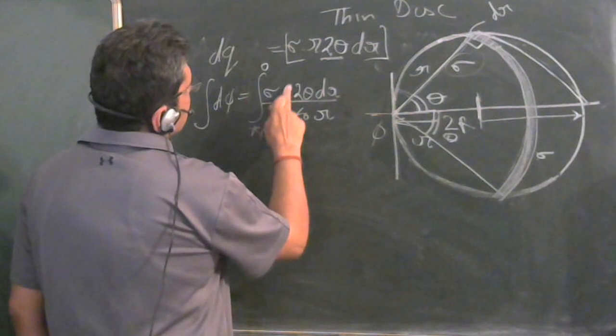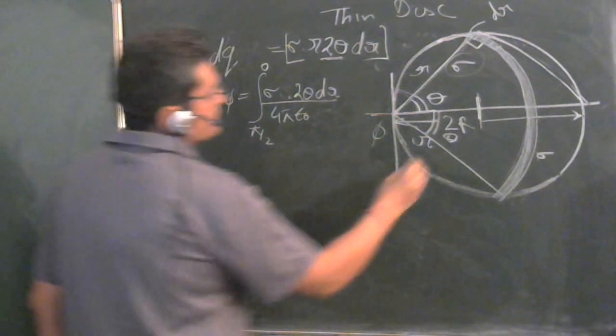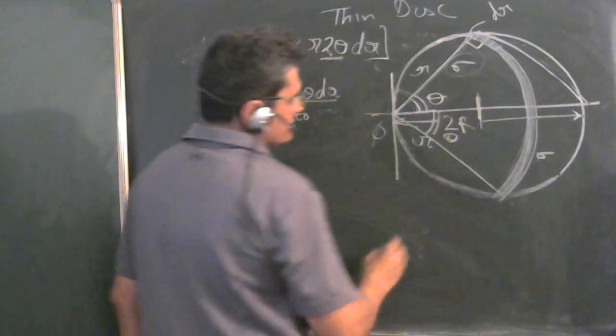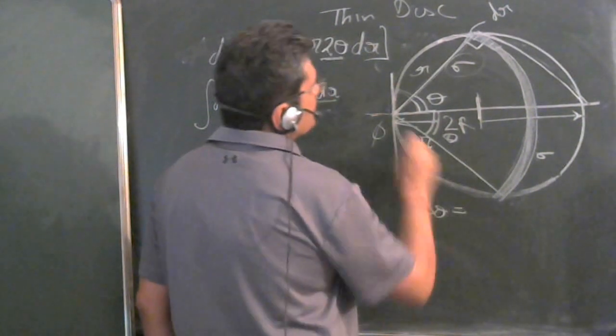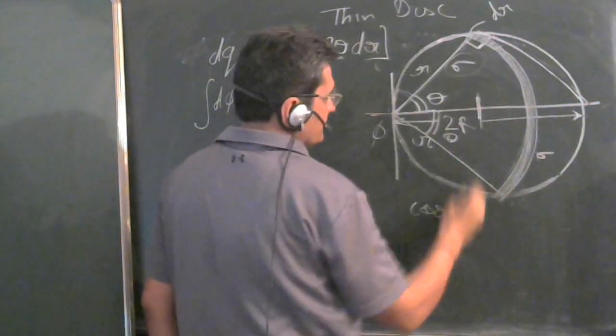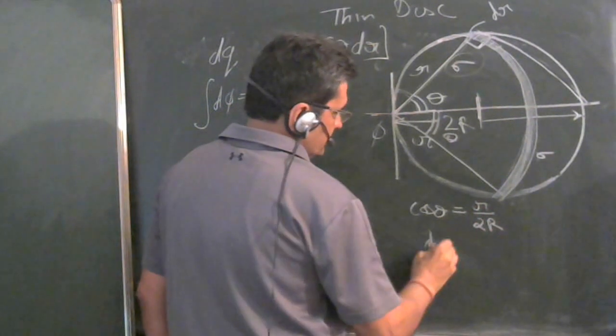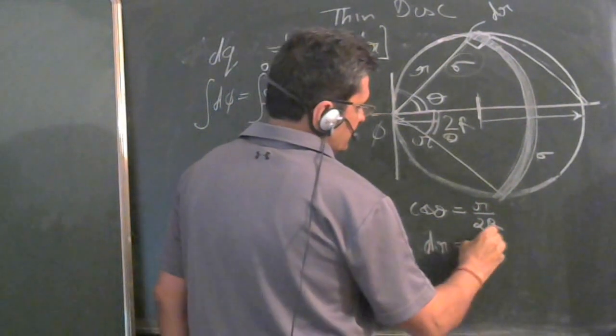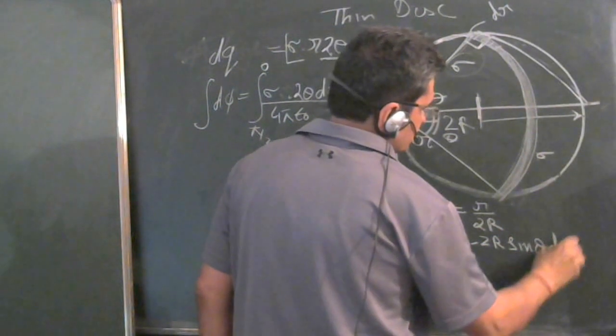R would get cancelled here. What is the relationship between R and theta? We know that cos theta can be written as base upon this because this is 90 degrees. So r upon twice r. So dr is equal to minus twice r sin theta d theta.